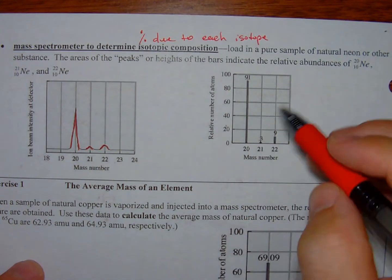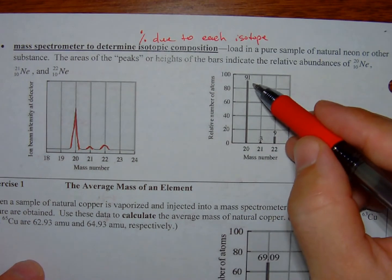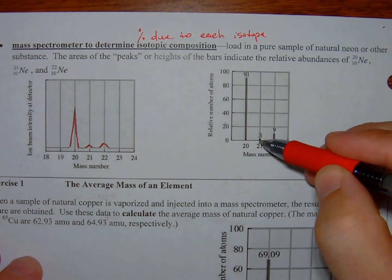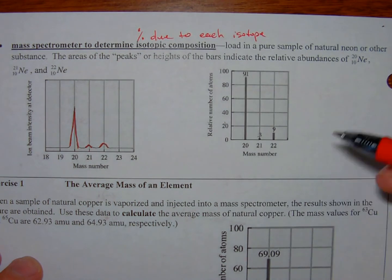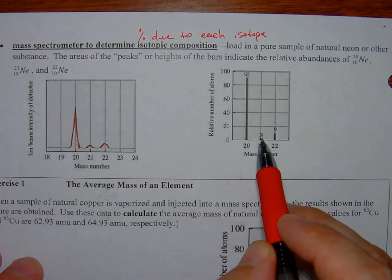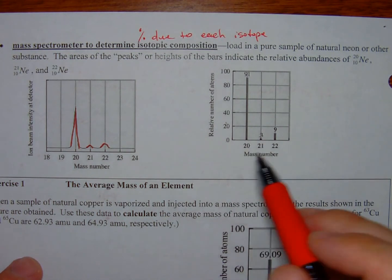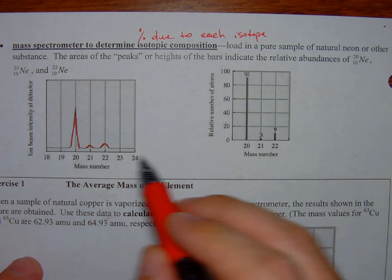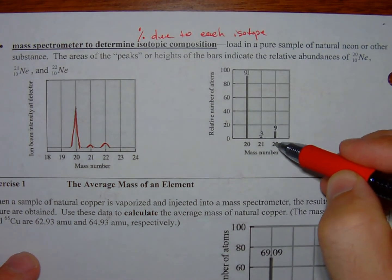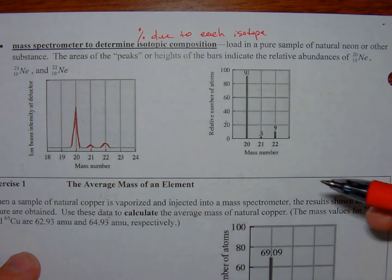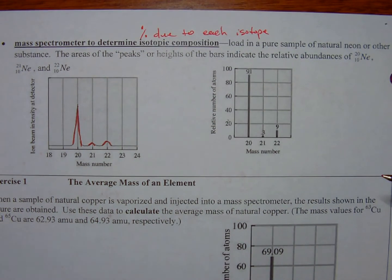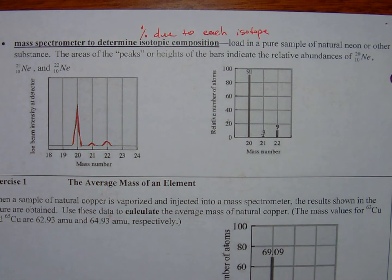Neon-20 is fully 91% of all the natural neon that exists in the world. Neon-21 is 0.3%. Now, you wouldn't have to guesstimate from this peak what that percentage is - you need the machine to do that for you to actually interpret the very specifics of the peak intensities. And then neon-22 makes up about 9% of naturally occurring neon. And it's that simple. That's all you'll have to do with a mass spectrometer.